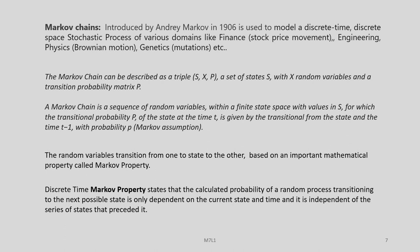Let us now look into a concept called Markov chains. This was introduced by Andrey Markov in 1906 and is used to model a discrete-time, discrete-space stochastic process in various domains like finance, engineering, physics, and even genetics. The Markov chain can be described as a triple of S, X, and P — a set of states denoted by S with X random variables and a transition probability matrix P. In simple terms, a Markov chain is a sequence of random variables within a finite state space for which the transitional probability of the state at time t is given by the state at time t minus 1, which is called the Markov assumption.